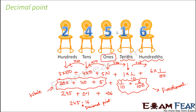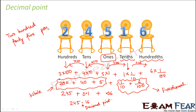So how will we read this number? 245.16 — this number is read as two hundred forty-five point one six. This is the way we read decimal numbers. With this introduction, it is now clear what decimal numbers are, why we need them, and how we form decimal numbers.